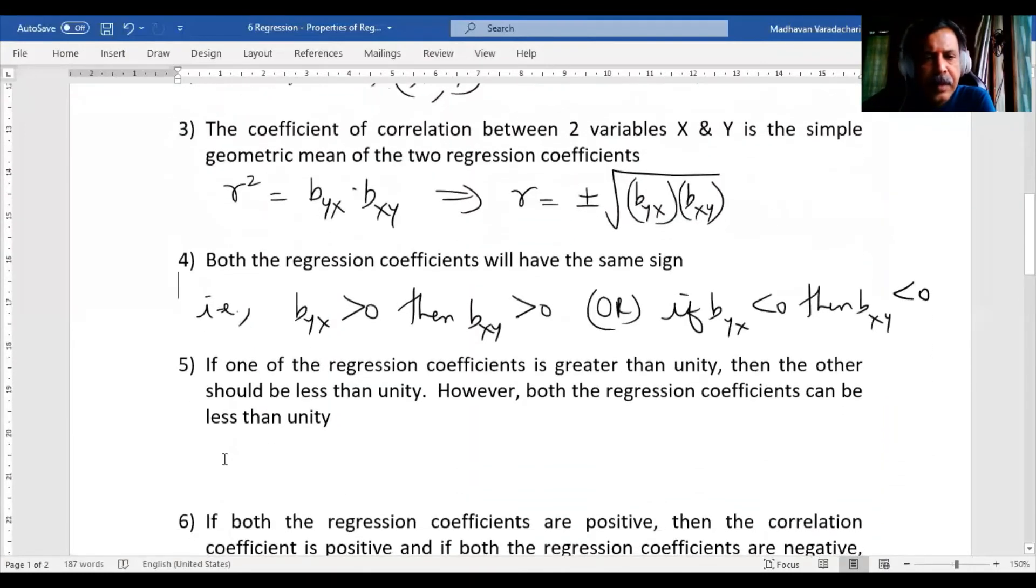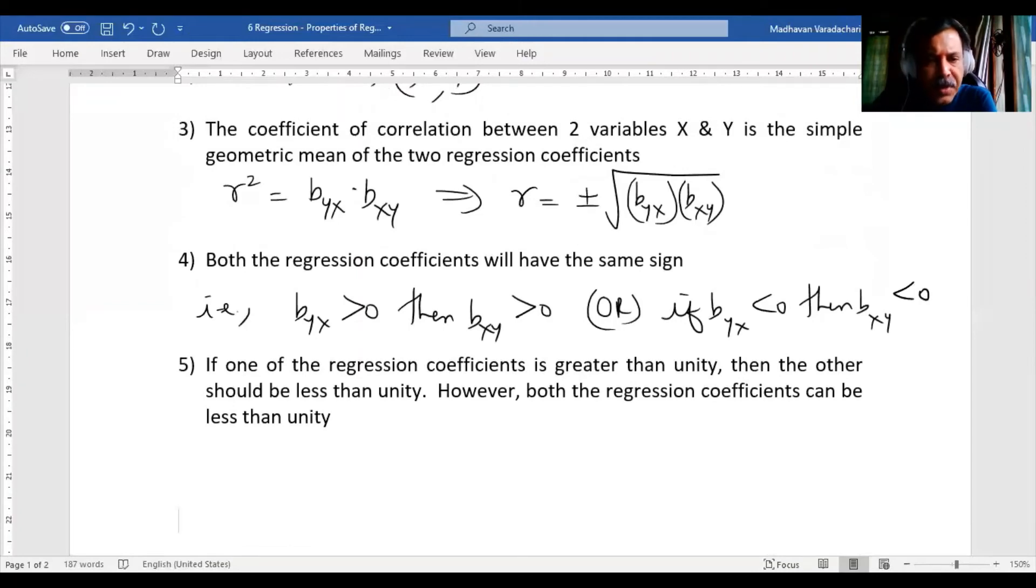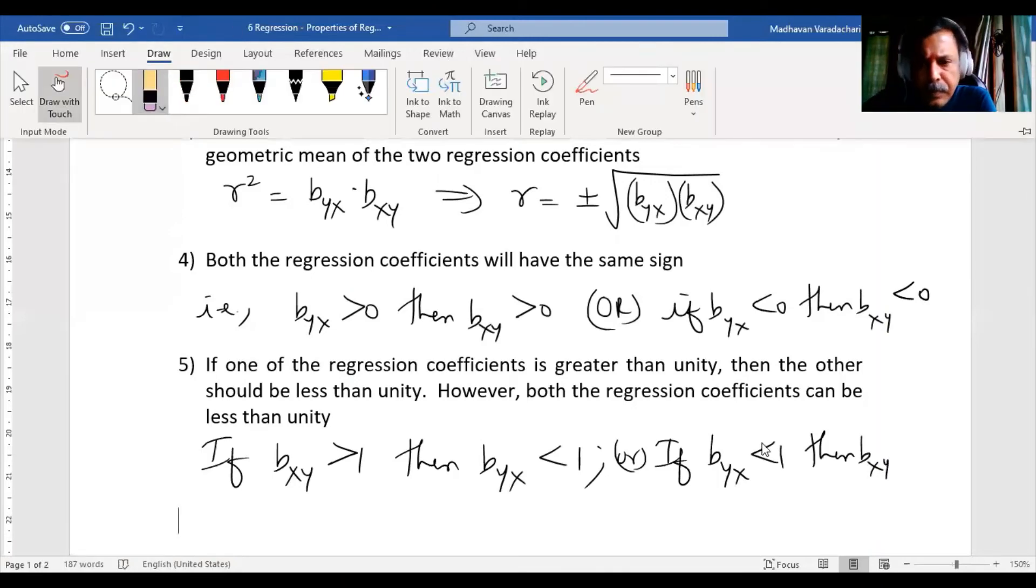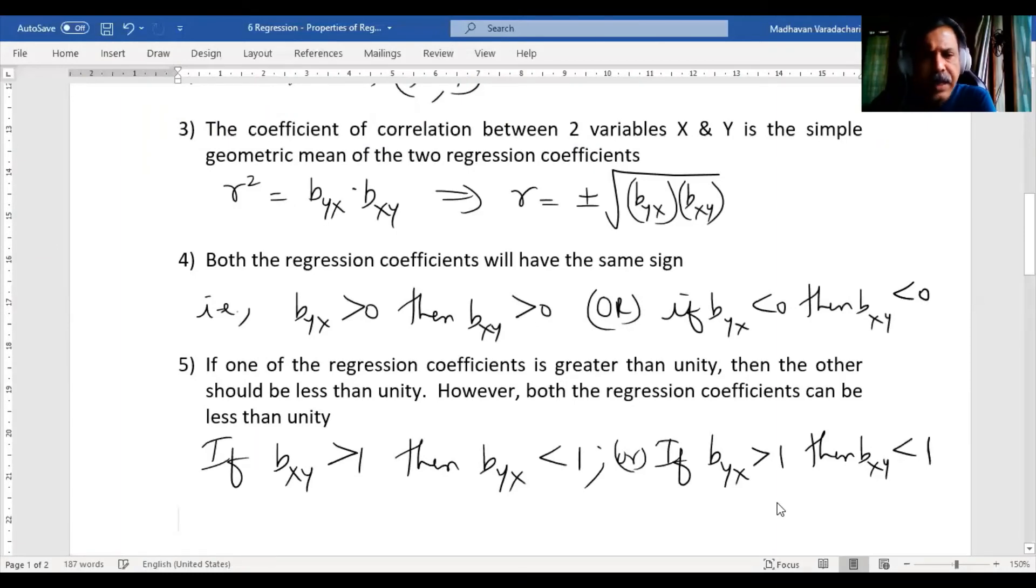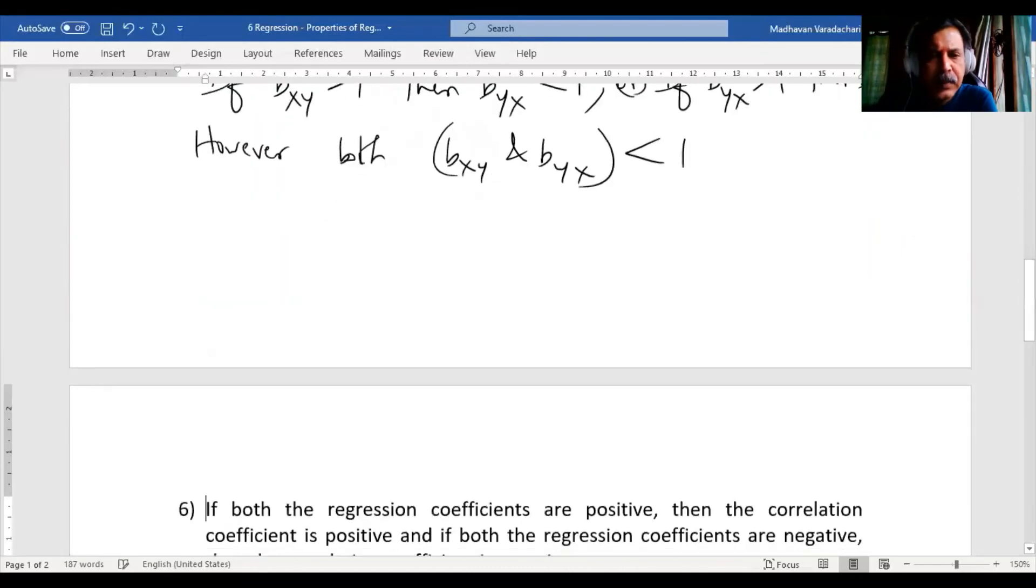Then the next one is: if one of the regression coefficients is greater than unity, then the other should be less than unity. However, both the regression coefficients can be less than unity. If b_xy is greater than one, then b_yx should be less than one. However, both b_xy and b_yx can be less than one; both can be less than unity, that is possible.